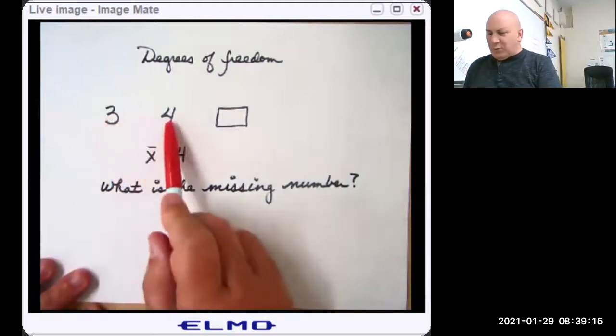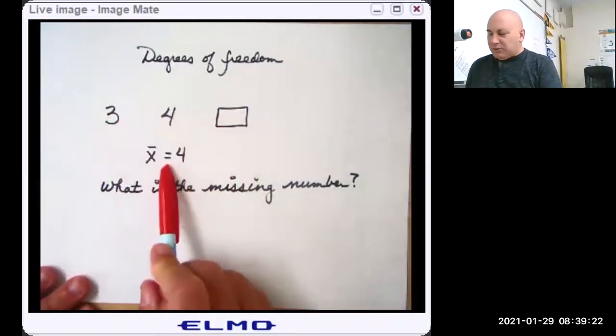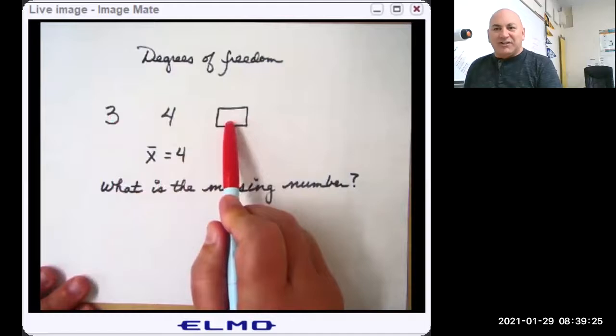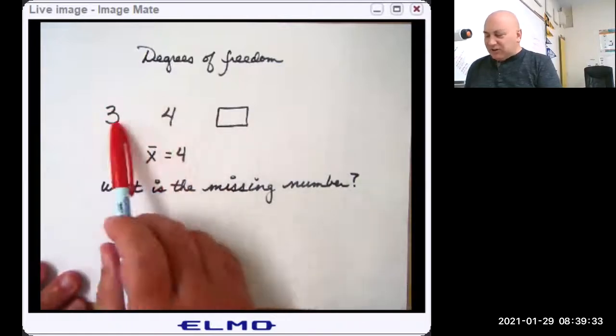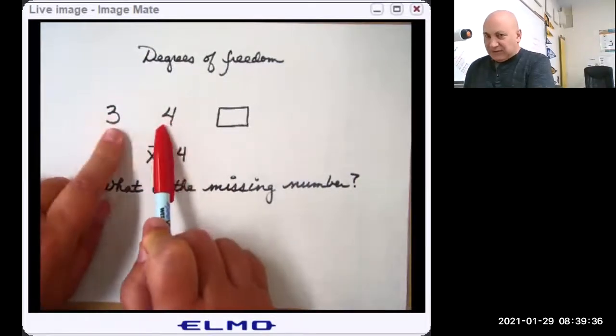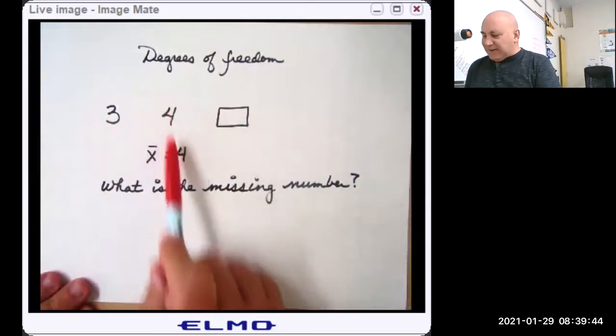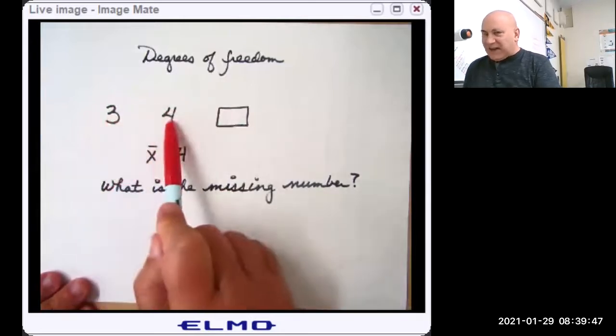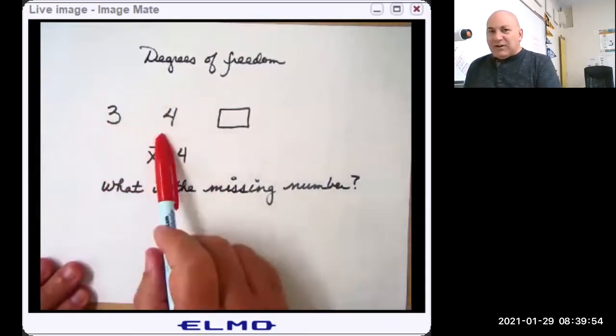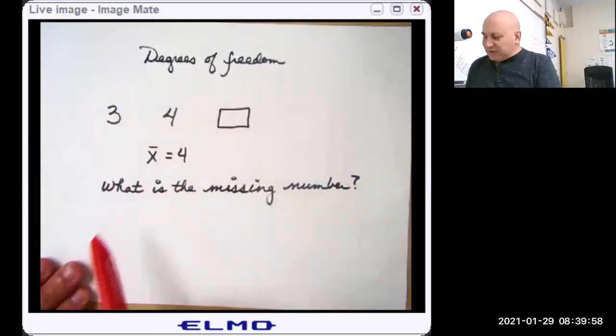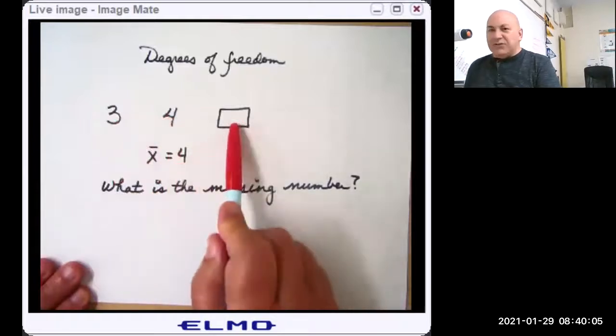Here I have three data points: three, four, and some unknown data point. If I tell you that the mean is four, there can only be one number that goes here. And what is it? Clearly it would be five. So I have two data points that can change. The moment these two data points are fixed, this third data point is also fixed. Once I fix three and five and the mean is four, well, this has to be four. Can't be anything else. So these two numbers decide what this third number is. So that's why there are two degrees of freedom here. Once these two are fixed and we know the mean, this one is also fixed.